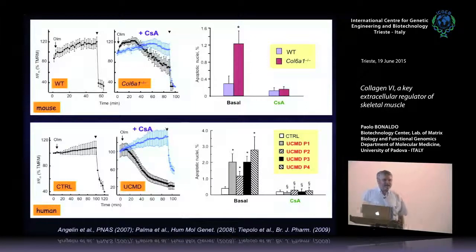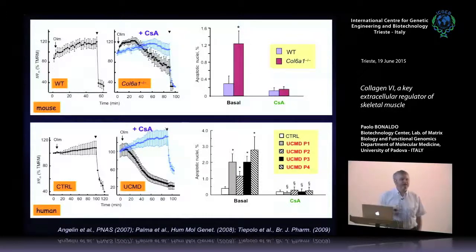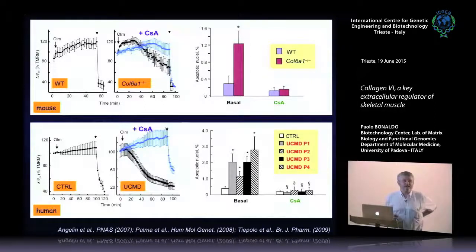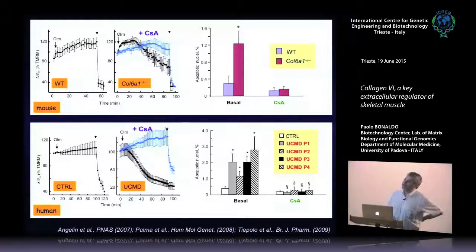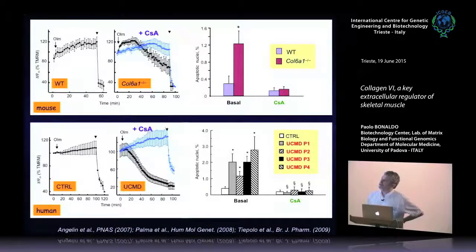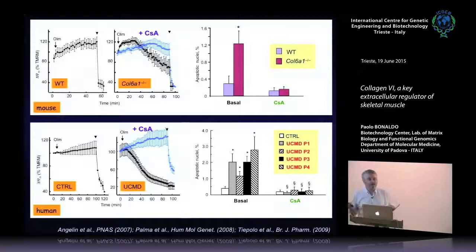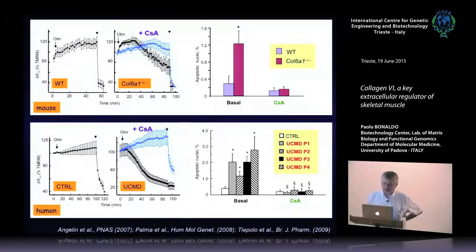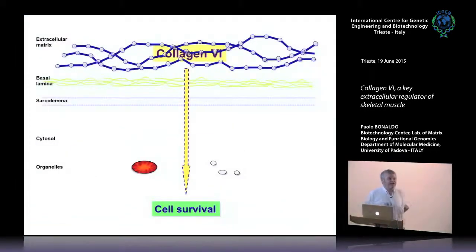This then led to a clinical trial in patients with cyclosporin A, performed with physician Luciano Merlini in Bologna — a worldwide expert on this disorder. He performed a three-month pilot clinical trial in patients using cyclosporin A pills like those taken by transplanted patients, then extended the study for one year. This demonstrated that in patients you are able to recover mitochondrial dysfunction and apoptosis by taking cyclosporin A. The problem is you cannot use this as long-term therapy because it is immunosuppressant — but it showed that like in mice, if you use this in patients you can recover the defects.